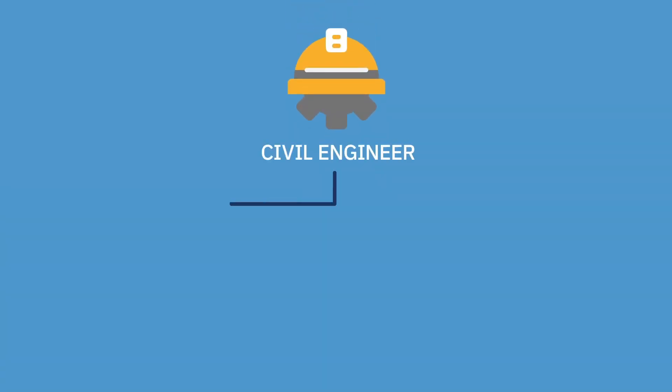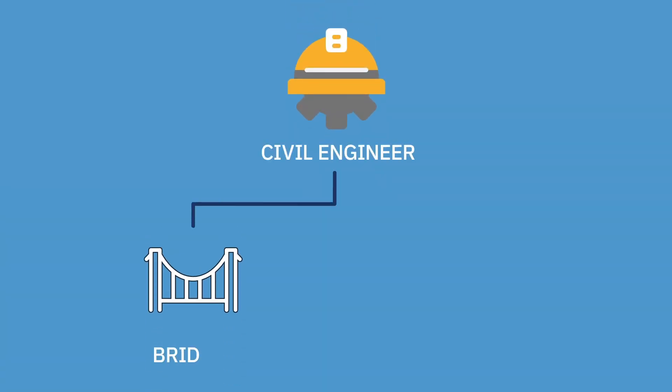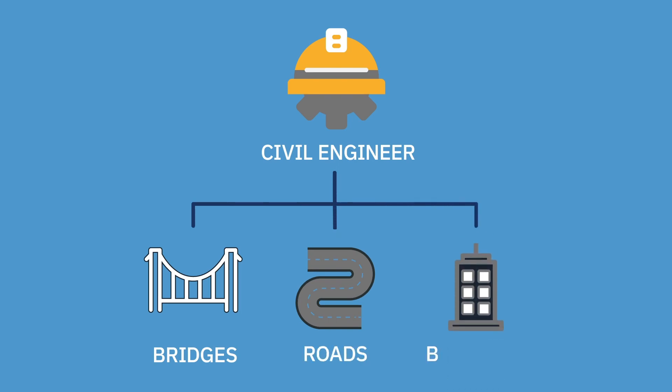First, I'm going to tell you a little bit about engineering and give you some examples of types of engineers. One type of engineer is a civil engineer. A civil engineer builds bridges, builds roads, builds buildings. Matter of fact, a civil engineer had a hand in building your school.